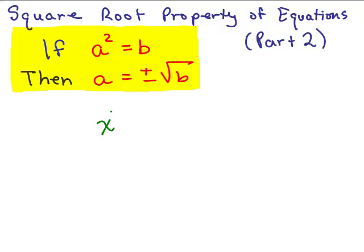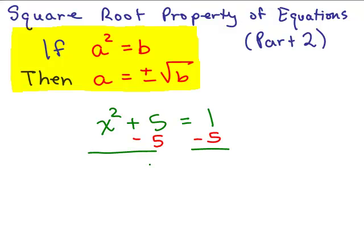Let's say I have x squared plus 5 equals 1. How would I solve this using this property? I need to have something in the form of just something squared equals a number. I have x squared plus 5, so my first step is to subtract 5 from both sides, giving us x squared equals negative 4. If we only knew about real numbers we would stop here, because squaring a real number can't give a negative result, but we've worked with complex and imaginary numbers so we can keep going.